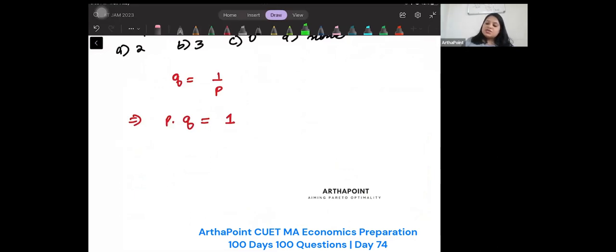P into Q will be 1. This is your total revenue. P into Q will be 1, whatever happens. Total revenue is 1. You will earn 1 rupee. That's your total revenue that you will earn is 1 rupee. So P into Q will be 1.